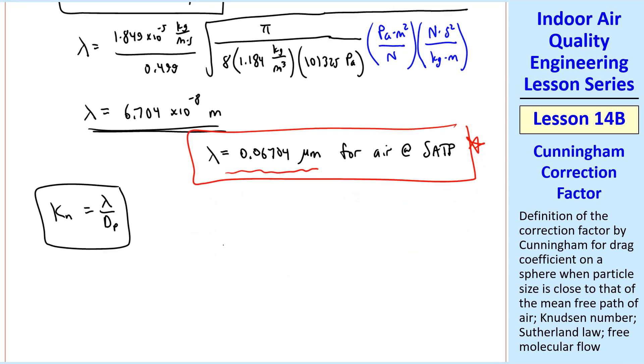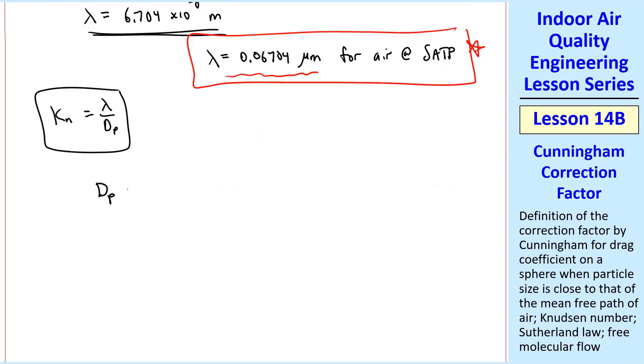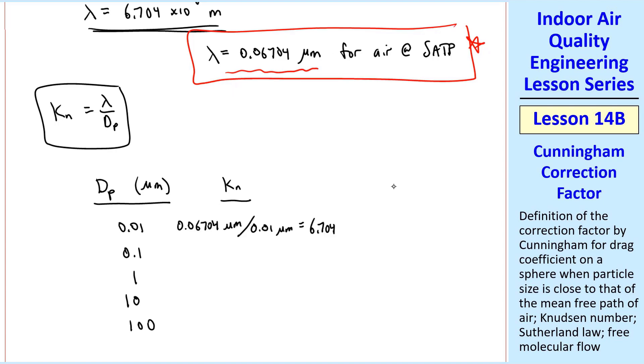Now let's calculate the Knudsen number. We'll look at various particle diameters. So I'll make a table of particle diameter in microns and Knudsen number. We'll calculate Kn for these five values of dp. For the first one we get 6.704. And since diameter is going up by a factor of 10, Kn goes down by a factor of 10, since dp is in the denominator and lambda is a constant at SATP. So these are the answers to this example problem. Notice that as dp goes up, Kn goes down.